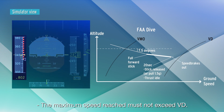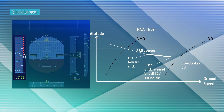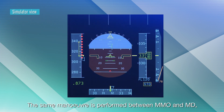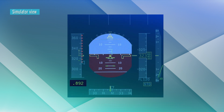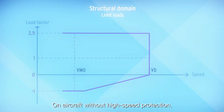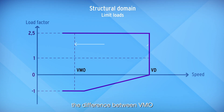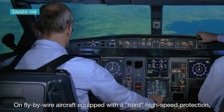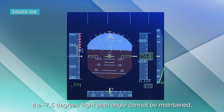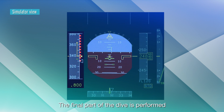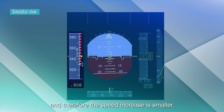The maximum speed reached must not exceed VD. The same manoeuvre is performed between MMO and MD, and another one starting at the corner point VMO/MMO. On aircraft without high speed protection, the difference between VMO and the maximum speed reached during the dive is usually around 50 knots. On fly-by-wire aircraft equipped with a hard high speed protection, the minus 7.5 degrees flight path angle cannot be maintained. The final part of the dive is performed with a lower pitch-down attitude and therefore the speed increase is smaller.